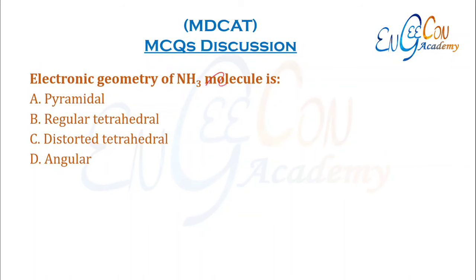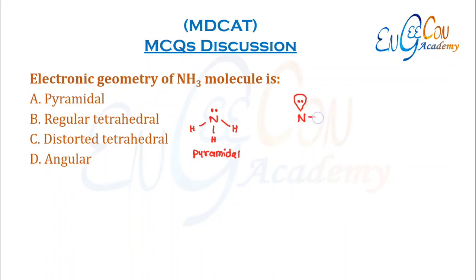Electronic geometry of NH3 molecule. NH3 has one lone pair and three bond pairs. Its molecular geometry is pyramidal. Considering all electron pairs, there are 4 electron pairs total — one lone pair and three bond pairs — making it distorted tetrahedral in electronic geometry, as the lone pair suppresses the bond pairs.